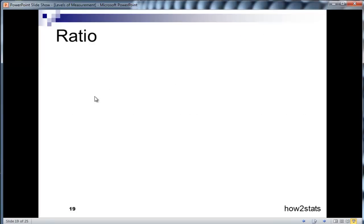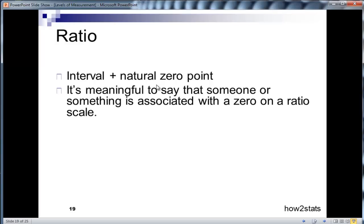So ratio, this is the last level of measurement and it's the most informative level of measurement because it incorporates everything interval does plus it actually has a natural zero point. And so it's meaningful to say that someone has zero on a ratio scale, so they have the total absence of the attribute measured on the ratio scale.